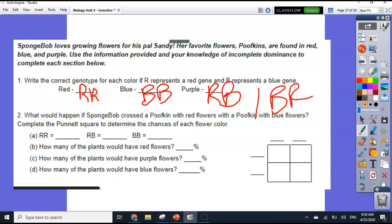So number two, what would happen if Spongebob crossed a poofkin with red flowers with a poofkin with blue flowers? So a red and a blue. So here's what we have to do. We need to figure out, well, what is the red flower? So the red flower is going to be big R, big R. So one of them is going to be big R, big R. So I'm going to put that on the side, big R, big R, with one with blue flowers. So blue flowers, that's big B, big B, big B.